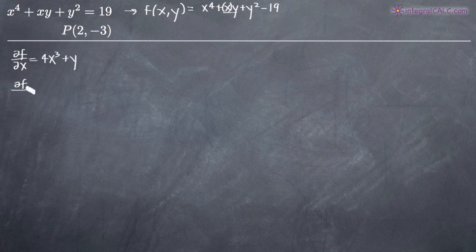The partial derivative of f with respect to y term by term will be zero. There's no y variable involved in the term x to the fourth so the derivative of that term is zero. The derivative of xy with respect to y will just be x. The derivative of y squared will be 2y and the derivative of negative 19 will be zero. So we end up with x plus 2y.